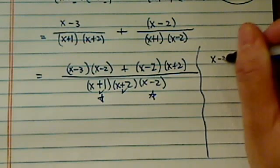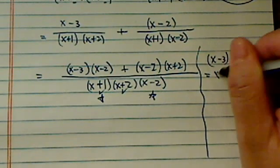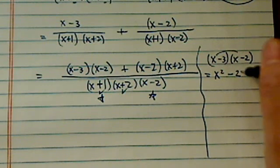Now, let's write it on the side. We have x minus 3 times x minus 2. If you multiply this one out, it's x squared minus 2x, and then minus 3x plus 6.